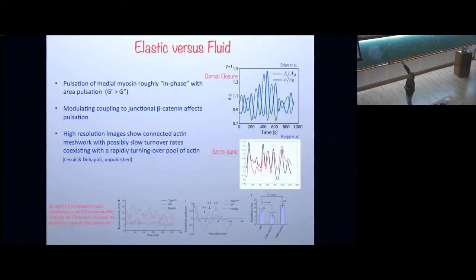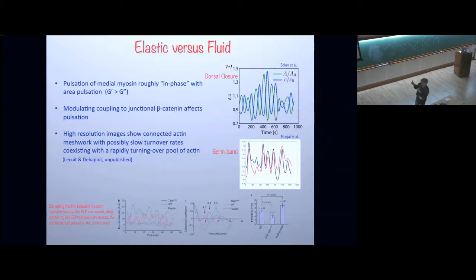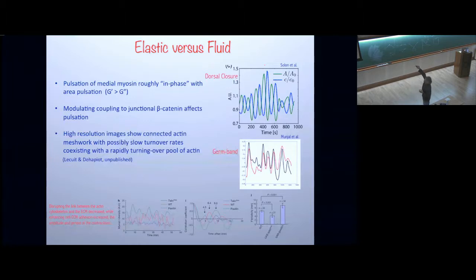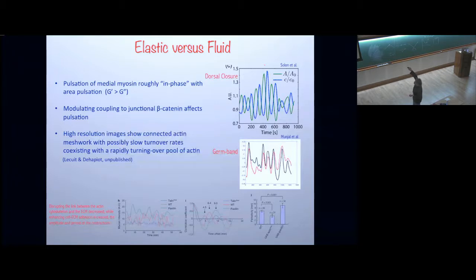If I look at the time series of the area, shown in green, and in blue the time series of the myosin, you find they are largely in phase. They look out of phase because one should be looking at minus A since the area is shrinking — they should be 180 degrees out of phase. If you calculate G prime at the frequency of oscillation of the myosin, G prime is larger than G double prime, indicating elastic behavior.